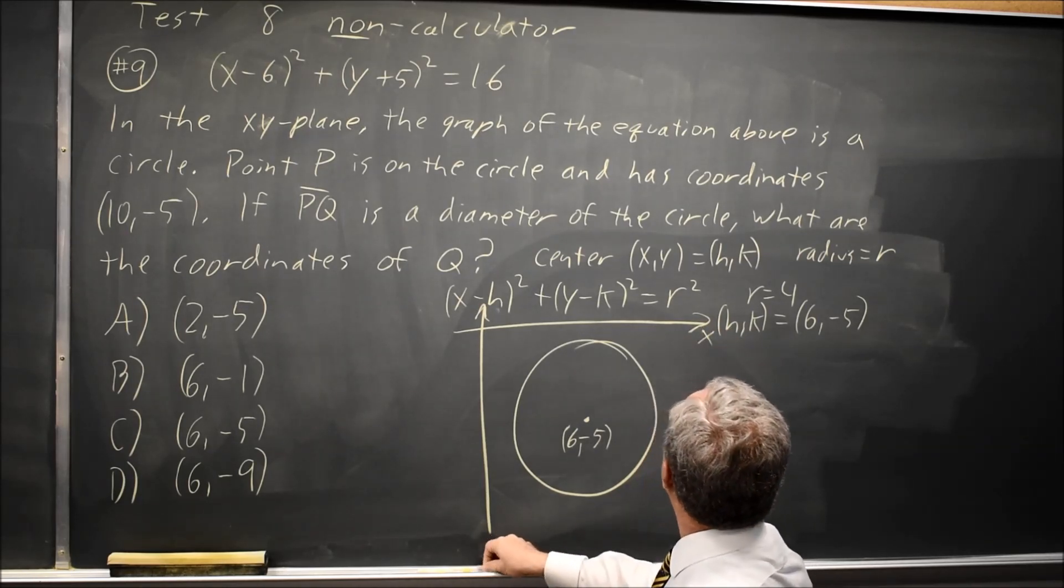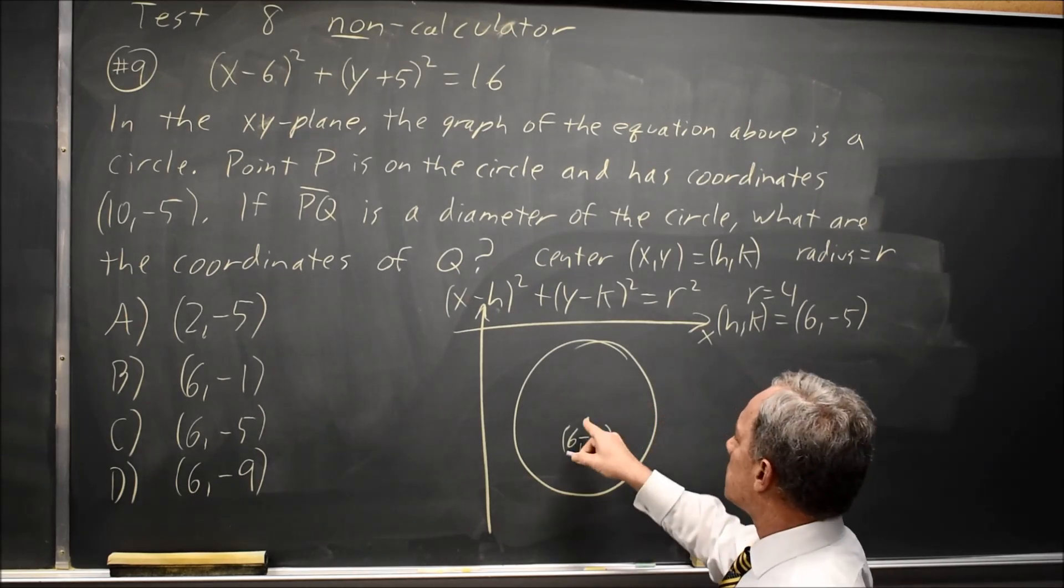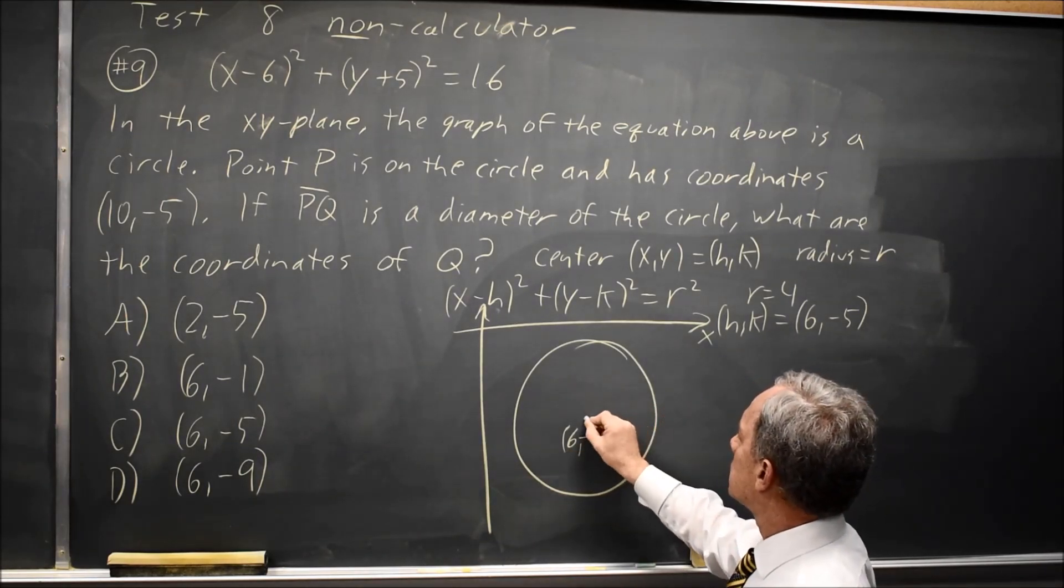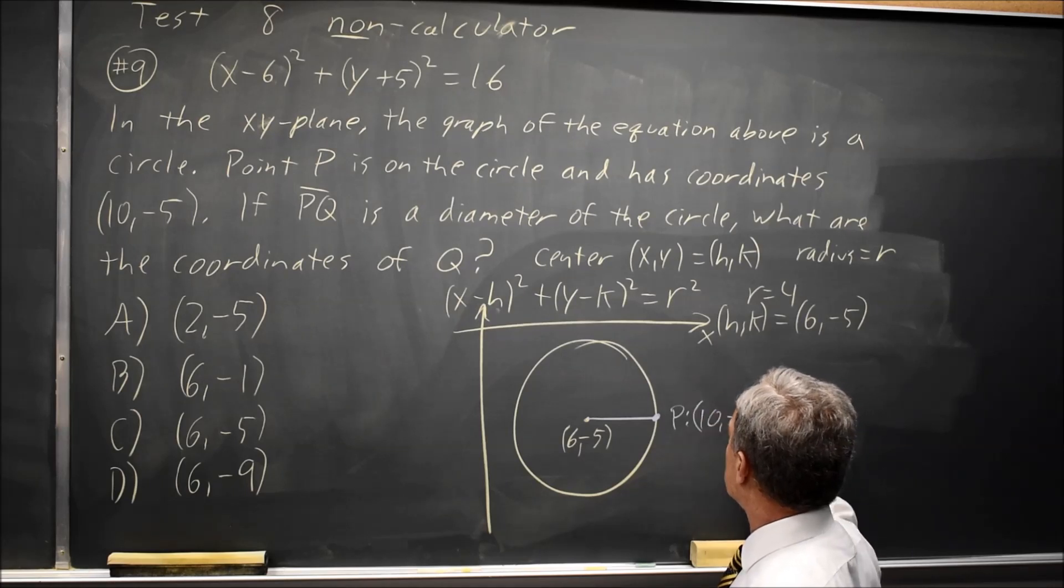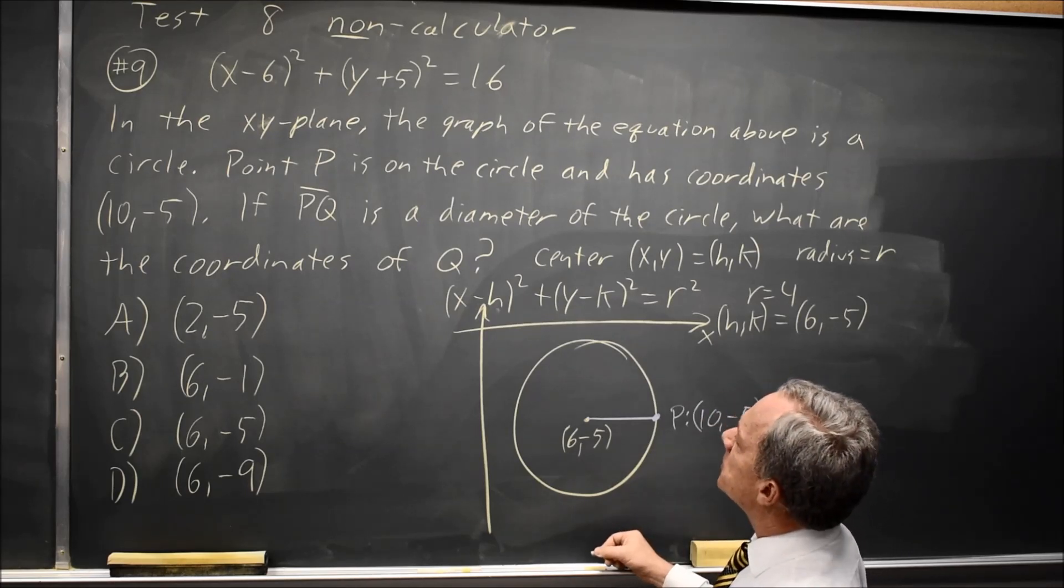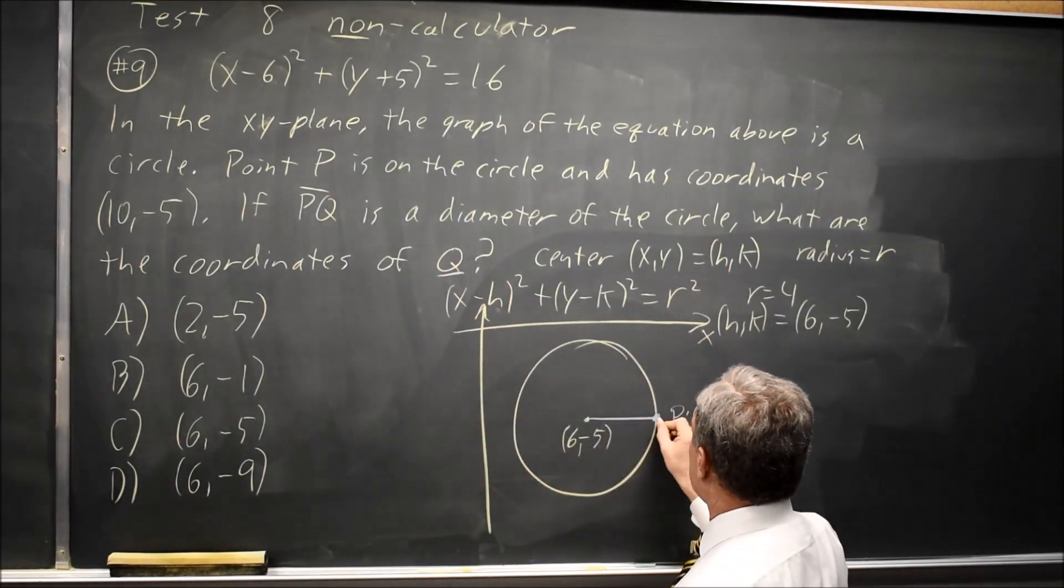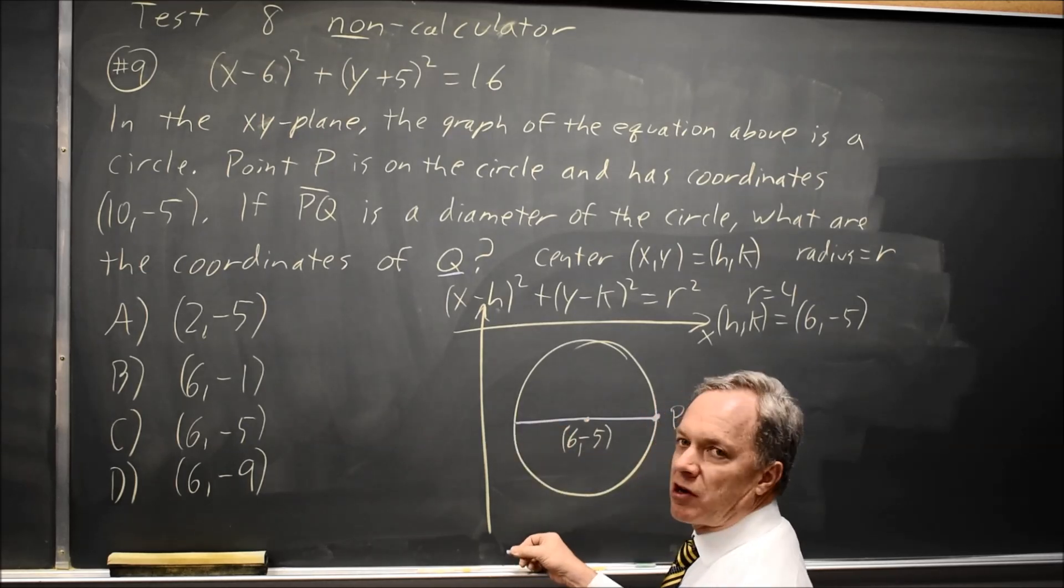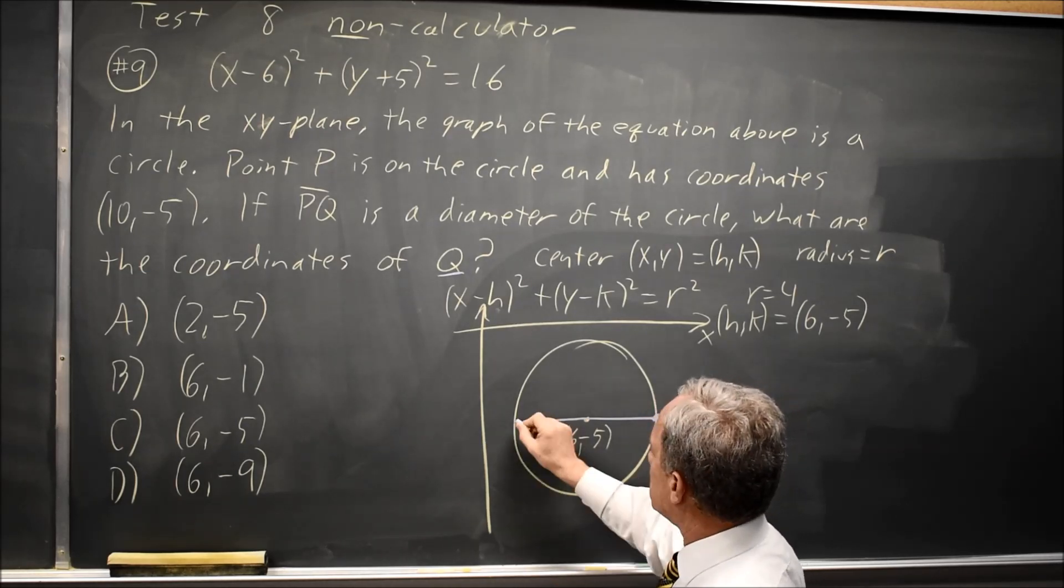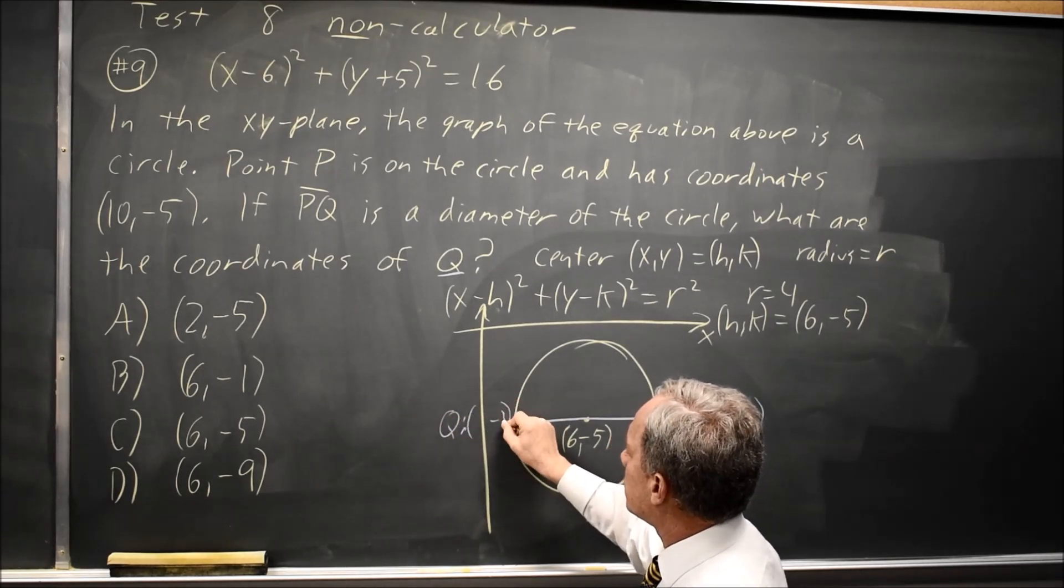I have point P which has the same Y coordinate as the center, but it's to the right where the X coordinate is 10. And the question is, if PQ is a diameter of the circle, what are the coordinates of Q? Well, if I draw the diameter, I see it's horizontally to the left, same Y value though. So point Q has a Y coordinate of negative 5.